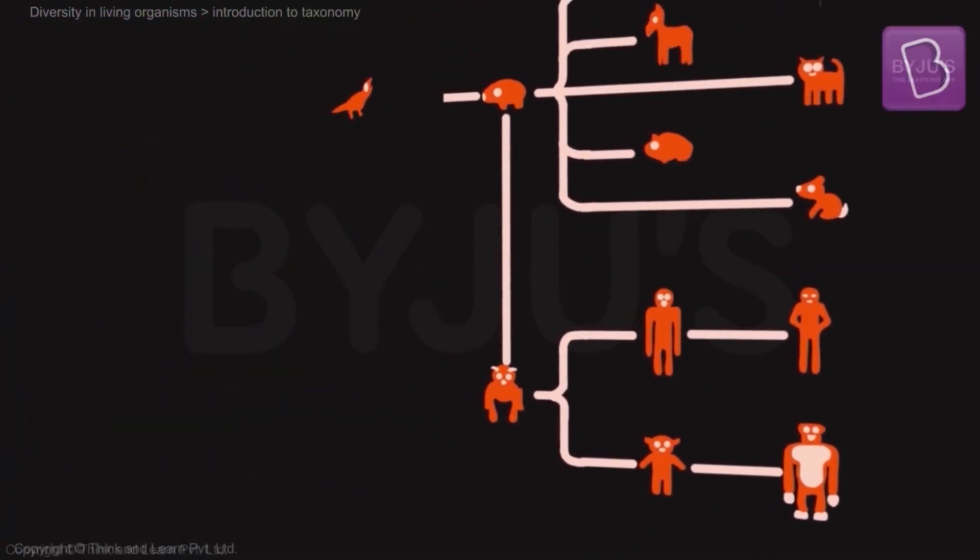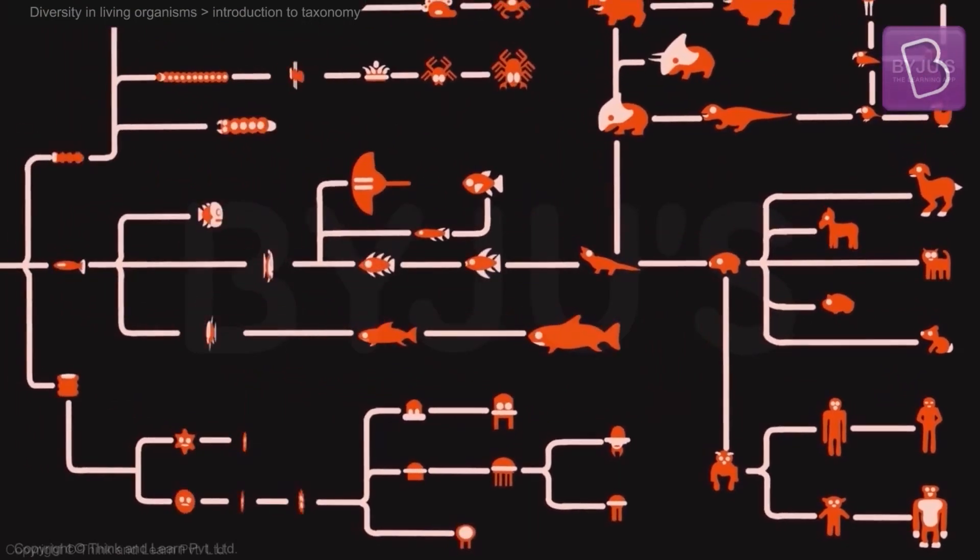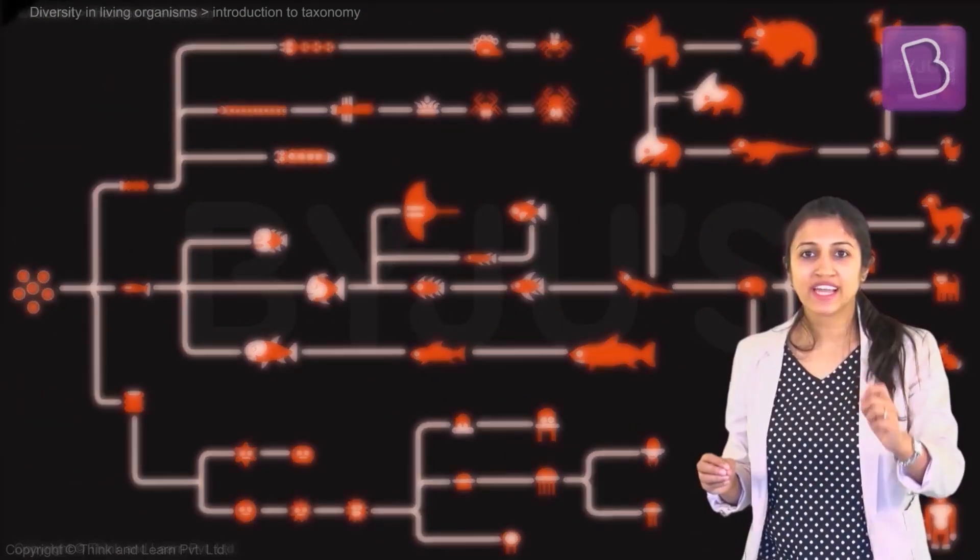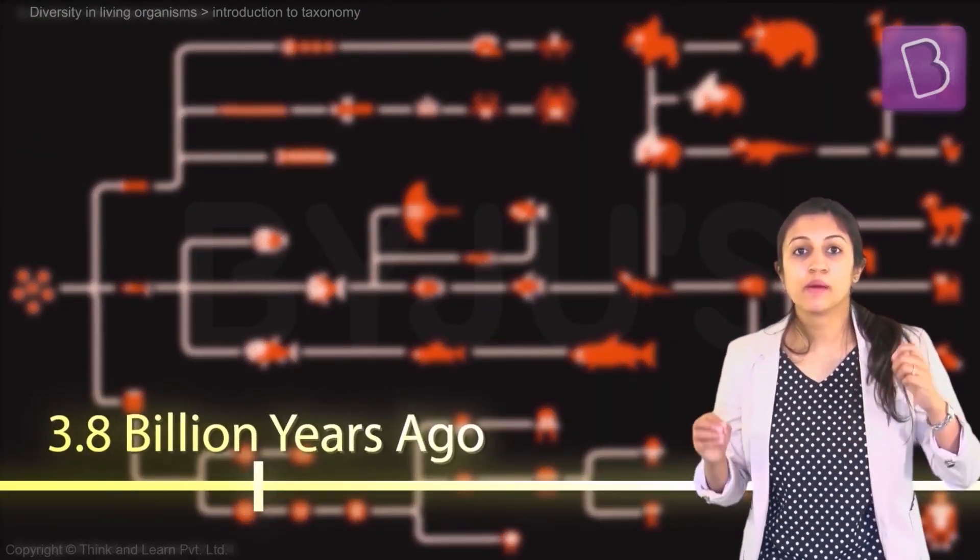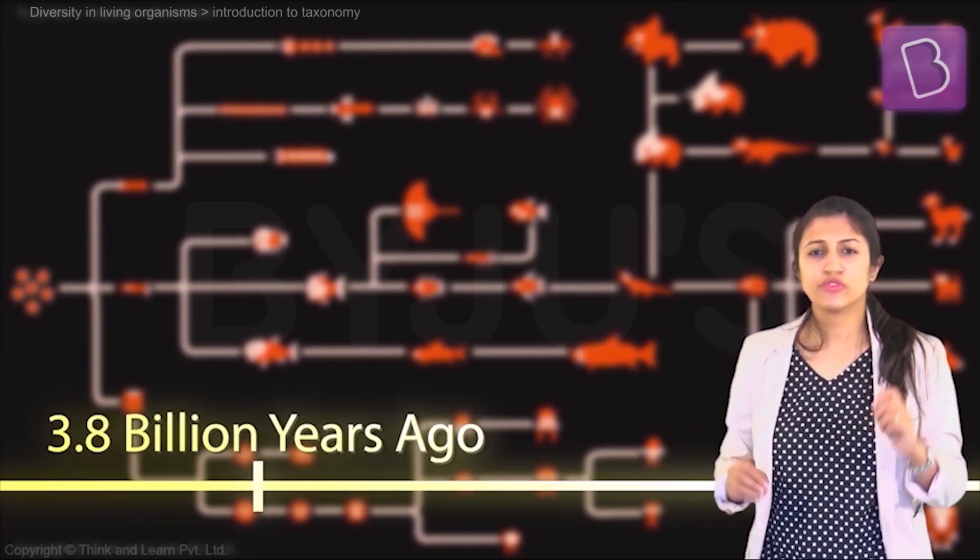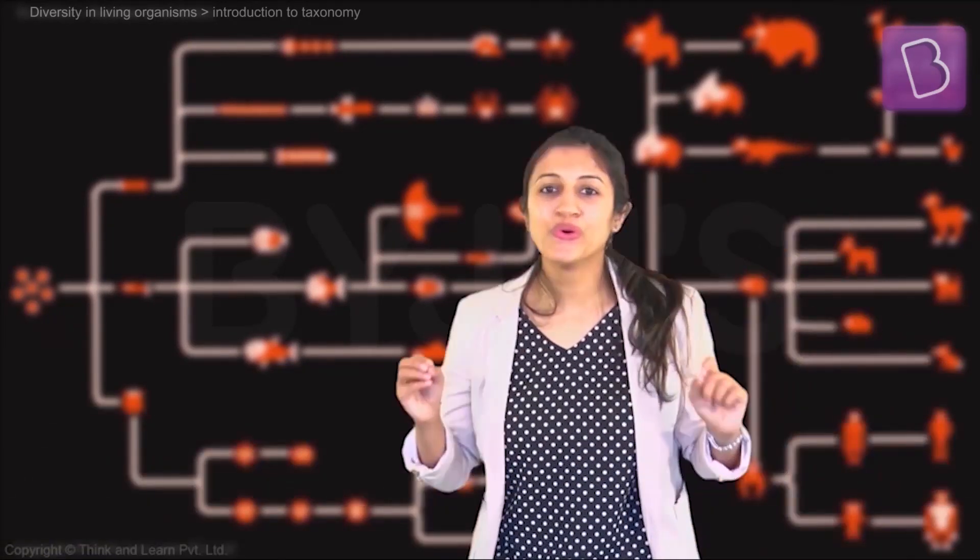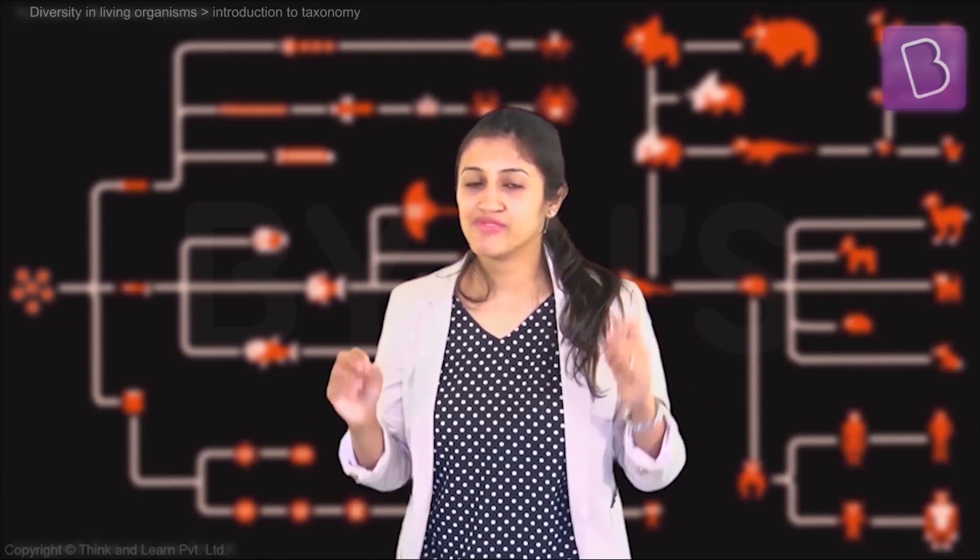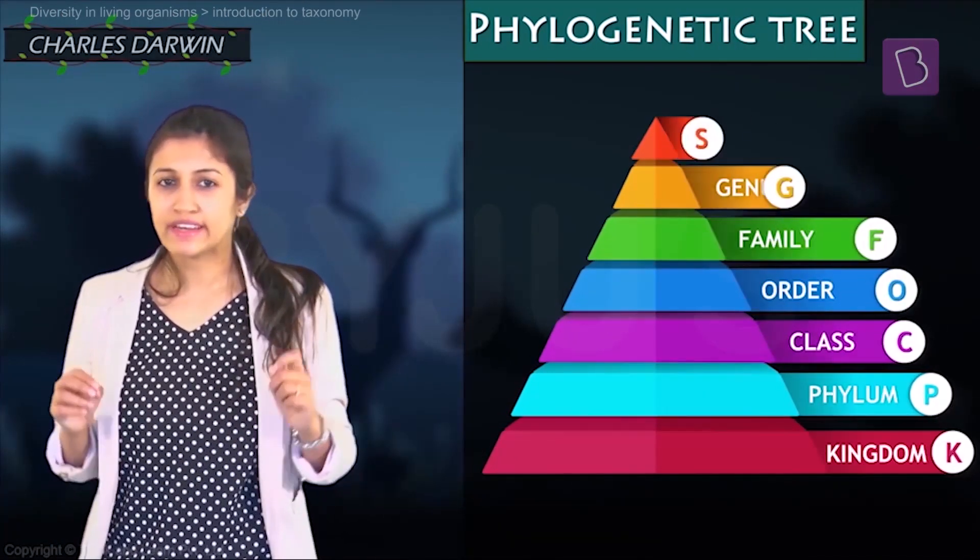It tells you that you have descended from different microorganisms and ultimately from one prokaryotic microorganism 3.8 billion years ago. And so it would not be wrong to say that the whole world is one big family. This tree represents the evolutionary relationships between all living organisms.